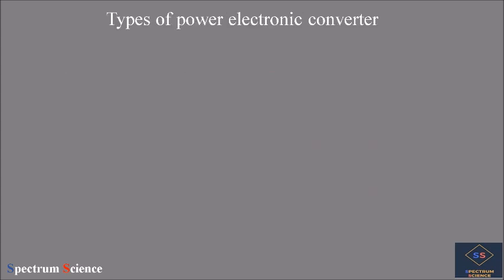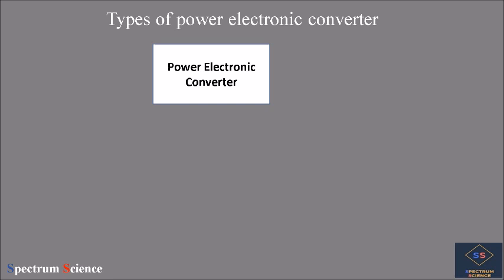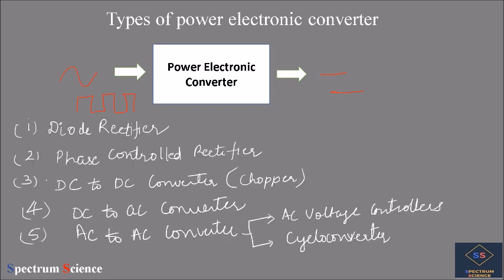Now let us see the types of power electronic converters. A converter converts input power of one form to output power of another form, such as AC to DC or a pulsed signal to DC. The first type is the diode rectifier or uncontrolled rectifier, which converts AC into a fixed DC — used in UPS or battery charging. The second is the phase-controlled rectifier, which also converts AC to DC but with a variable DC output depending on switch operation, used in DC drives or power supplies.